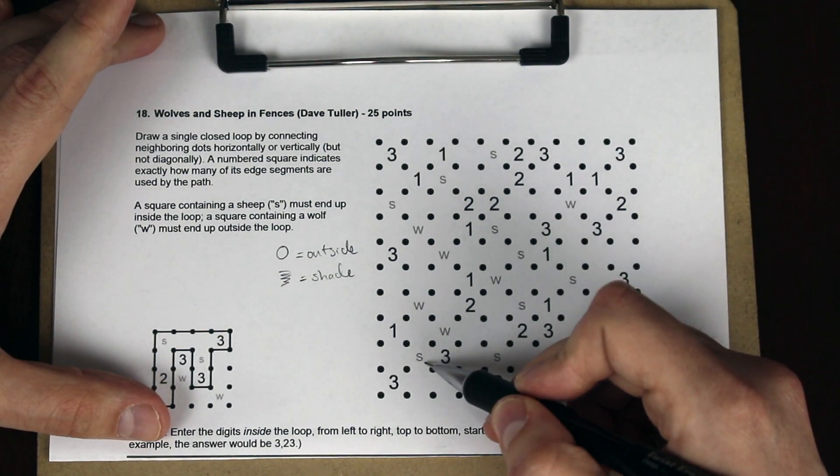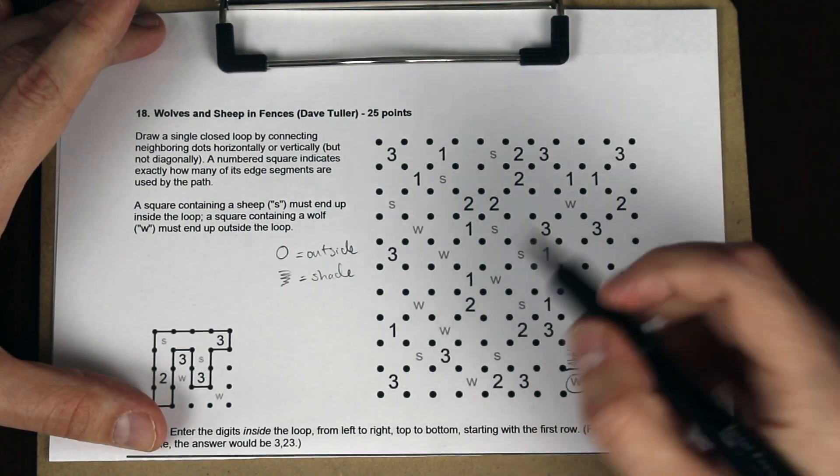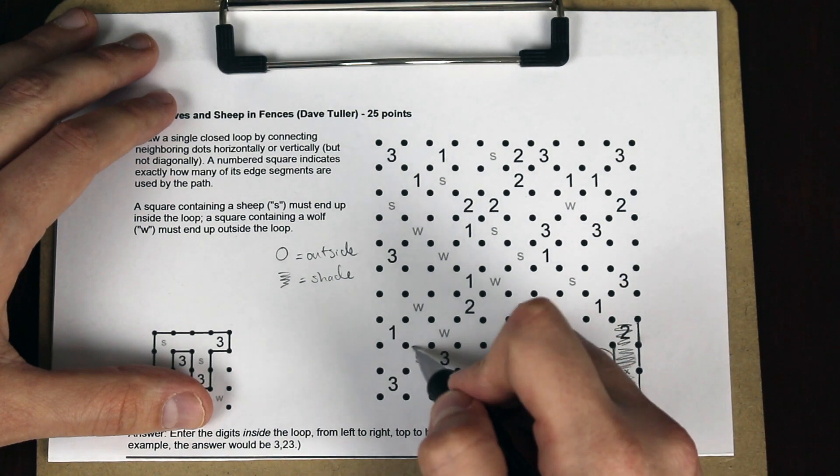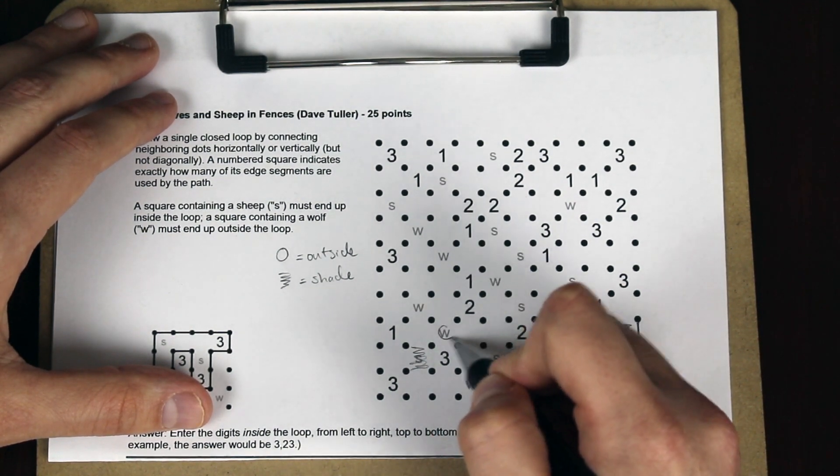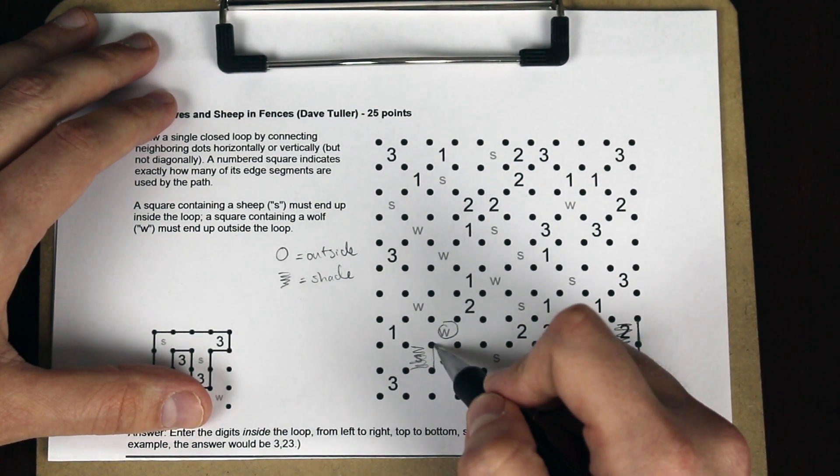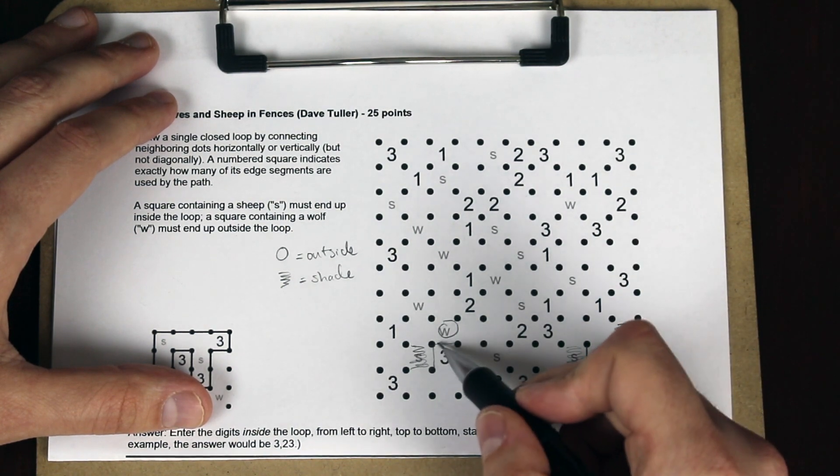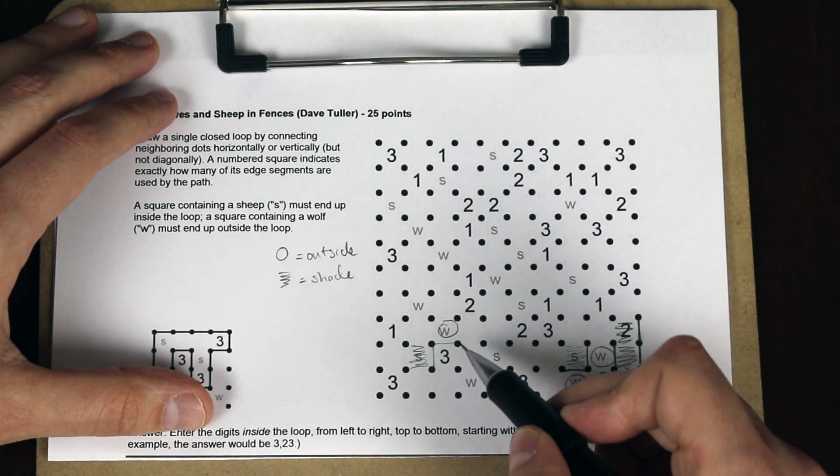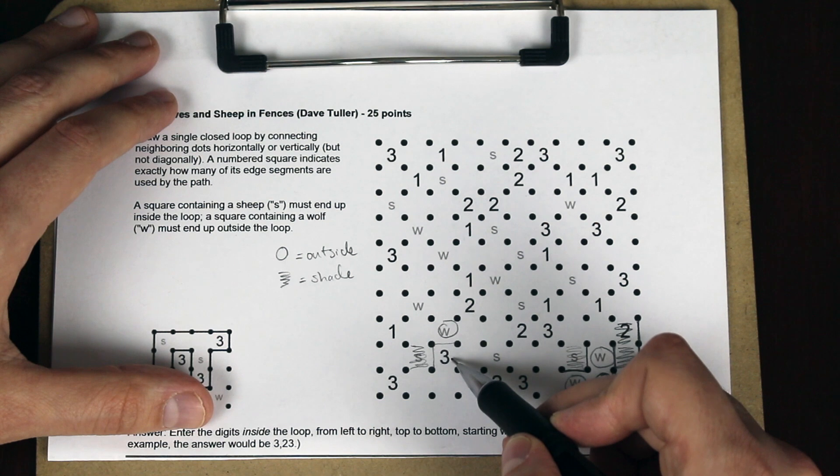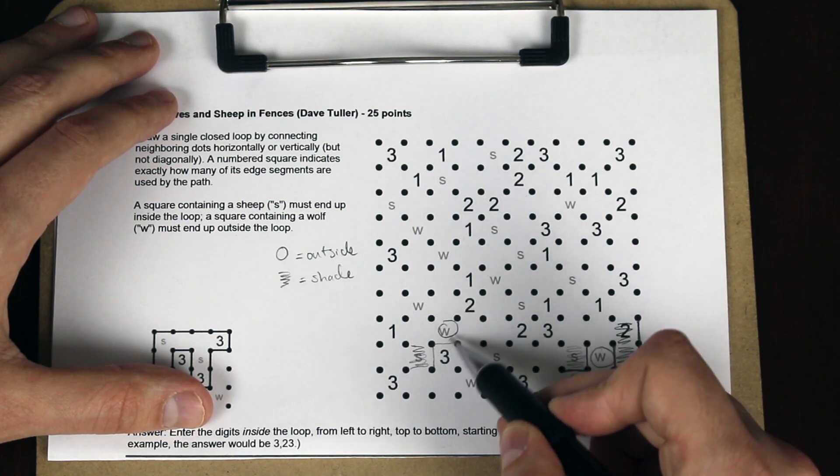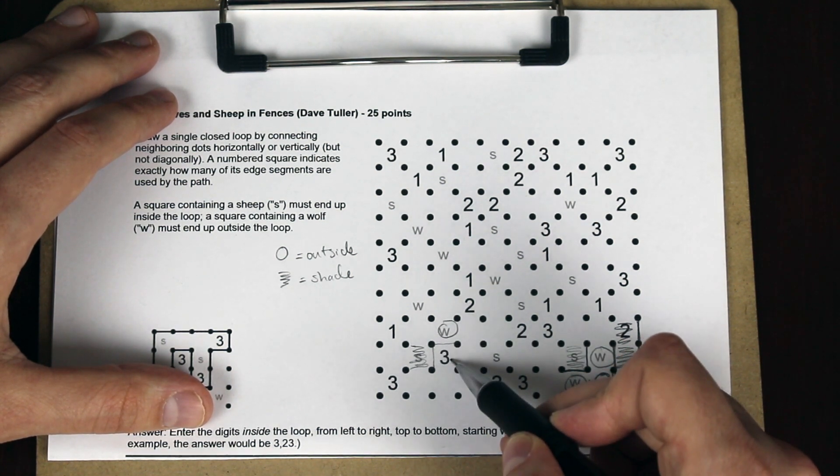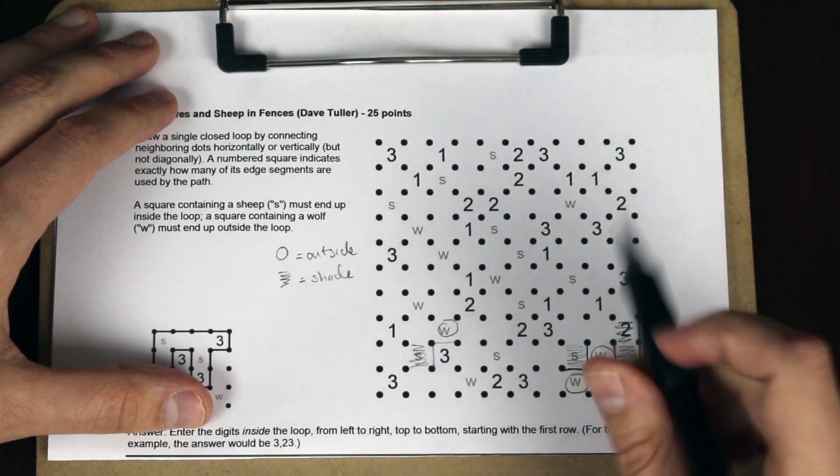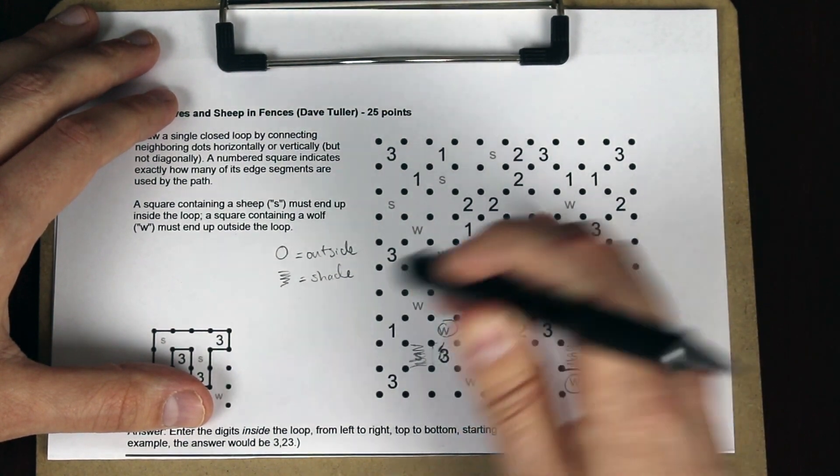Here we have a three next to a sheep and a wolf over here. Let's fill in the sheep and the wolf, and then think about how that three can go. Can the three go like this, with the two line segments here? Well, it can't really do that, because if it did, this would have to be both inside the loop by this edge, and outside the loop by this edge. So the three has to actually go the other way.